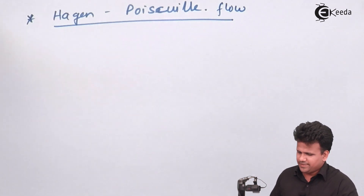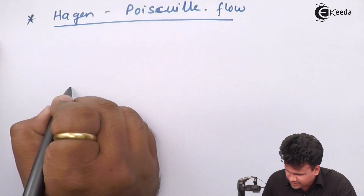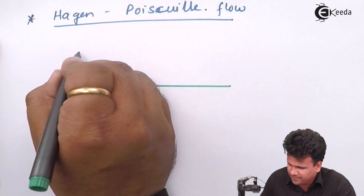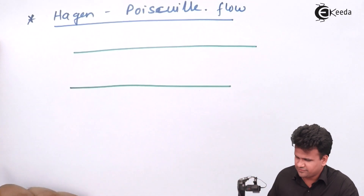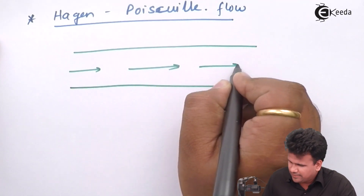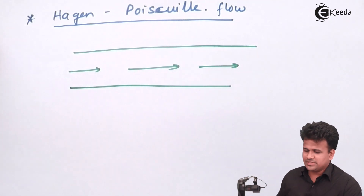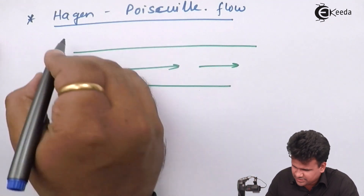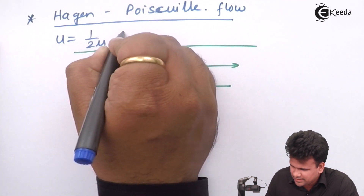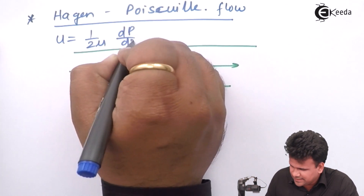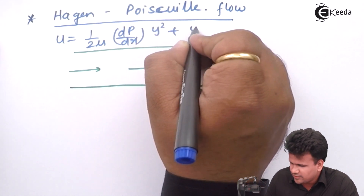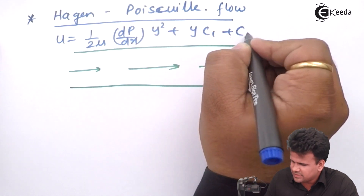What we have to know is that there is a fluid flowing through a pipe. This is the bottom surface of the pipe, this is the top surface of the pipe, and the fluid is flowing through it. We already know the solution of the Navier-Stokes equation: u = (1/2μ)(dp/dx) · y² + y·c₁ + c₂.